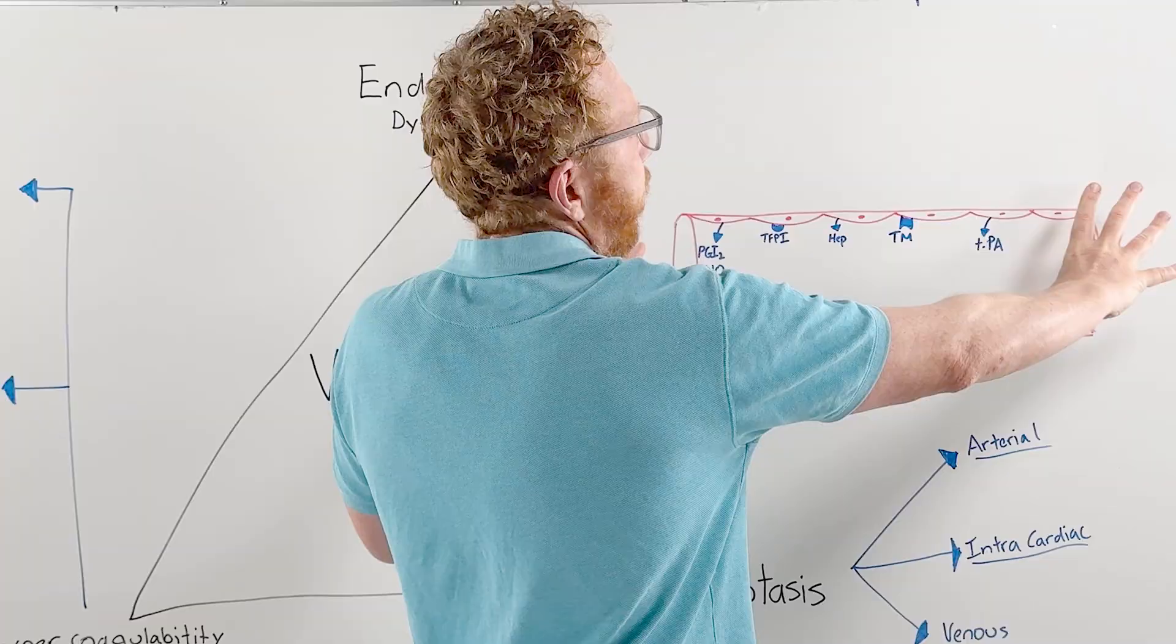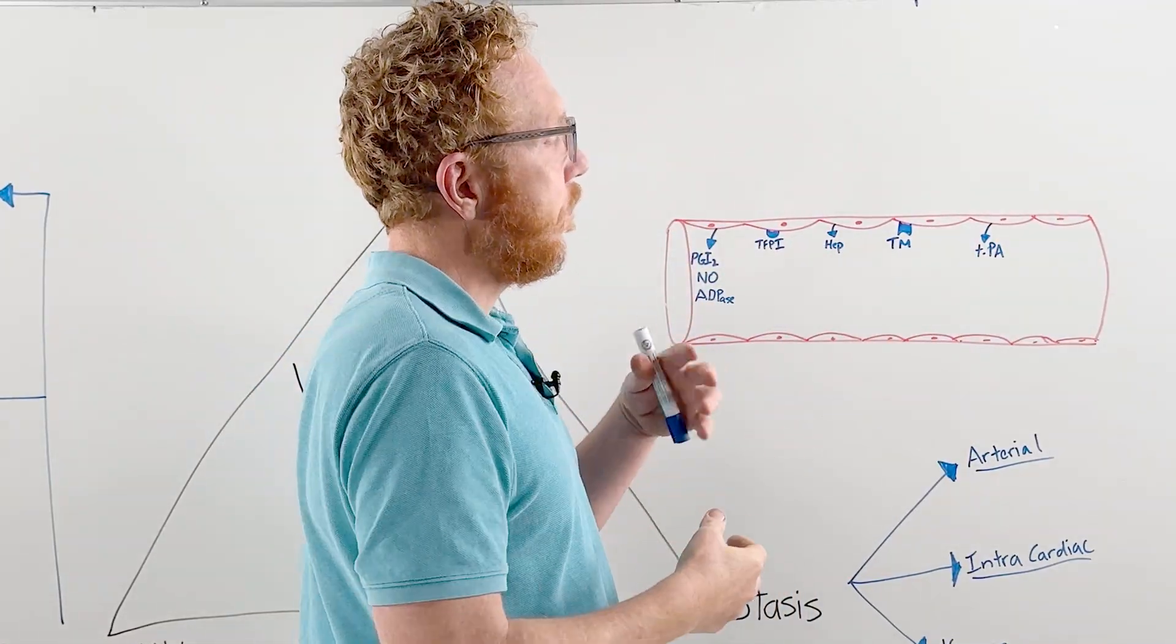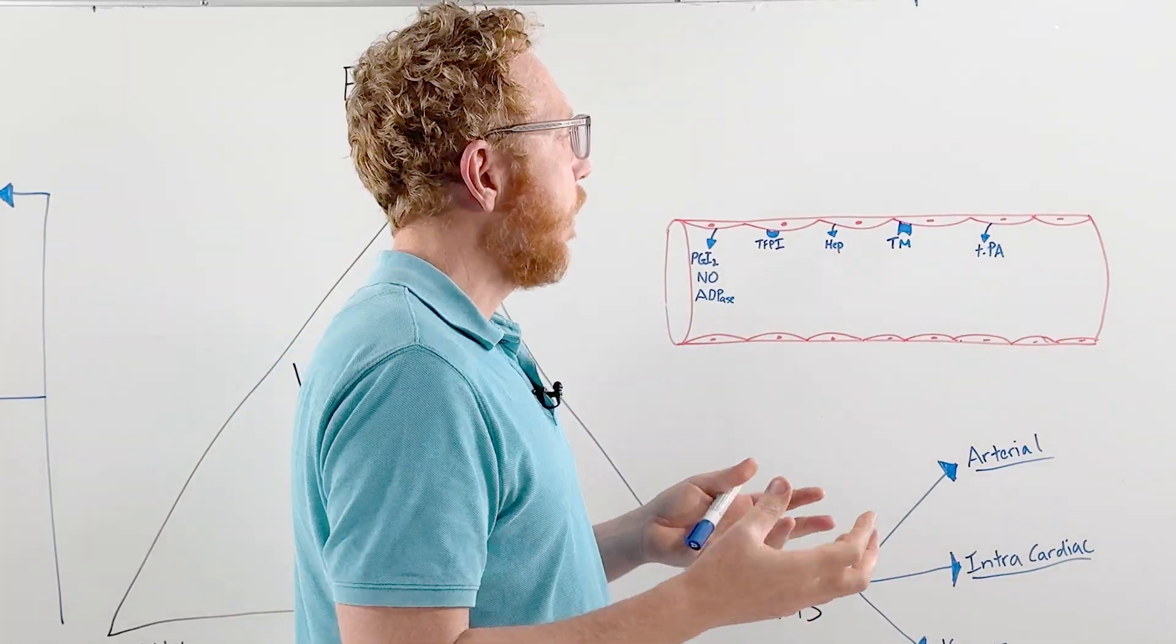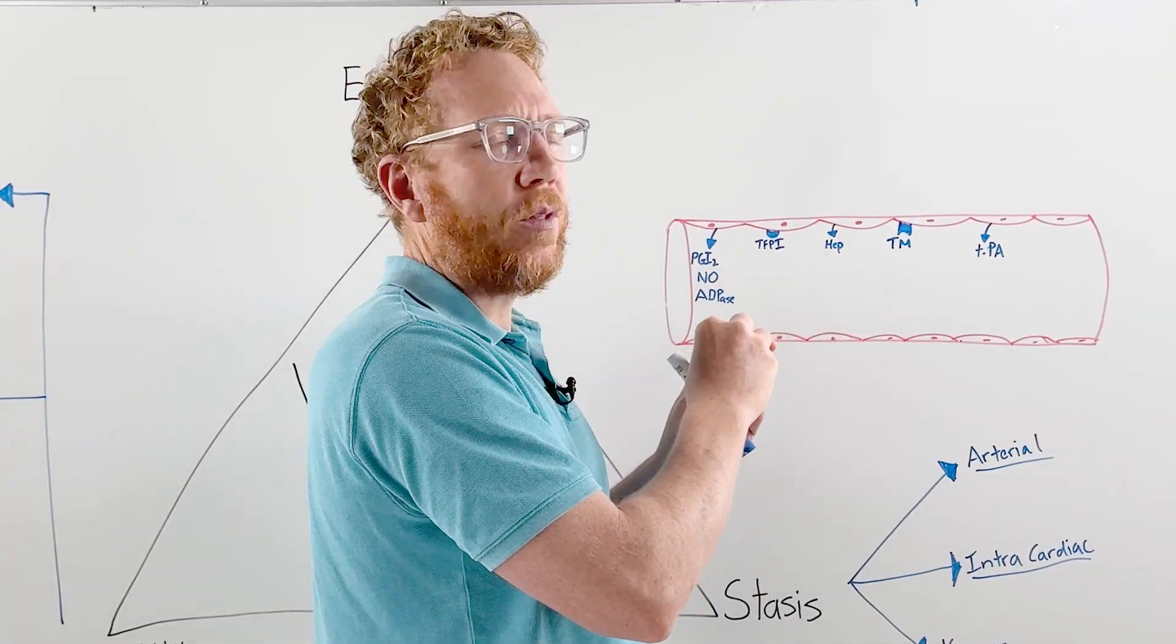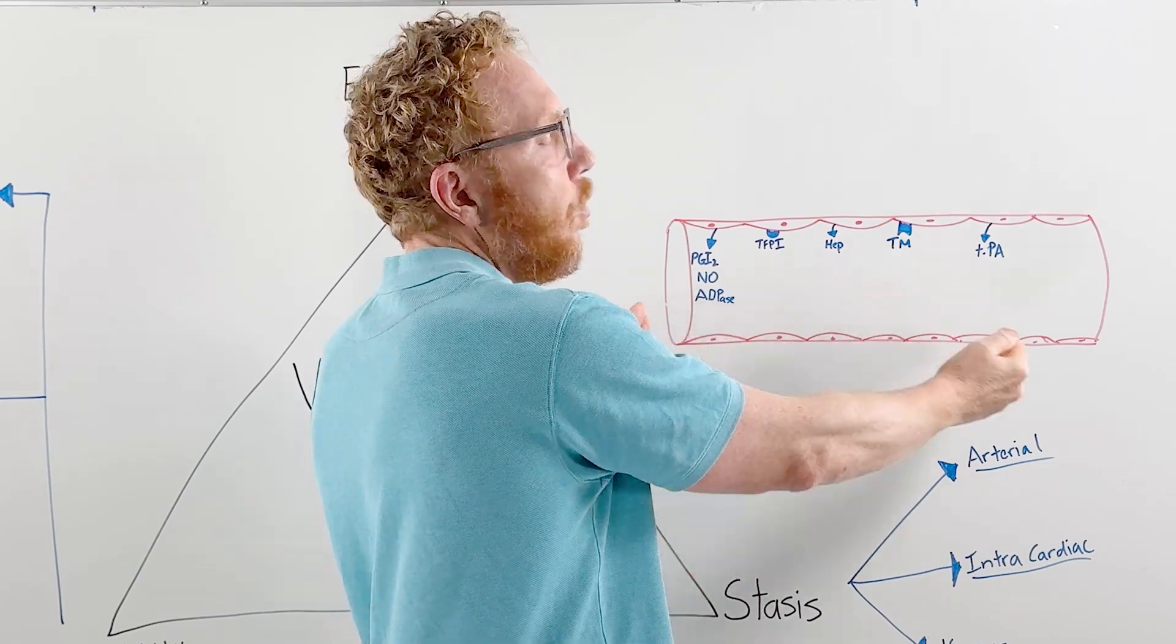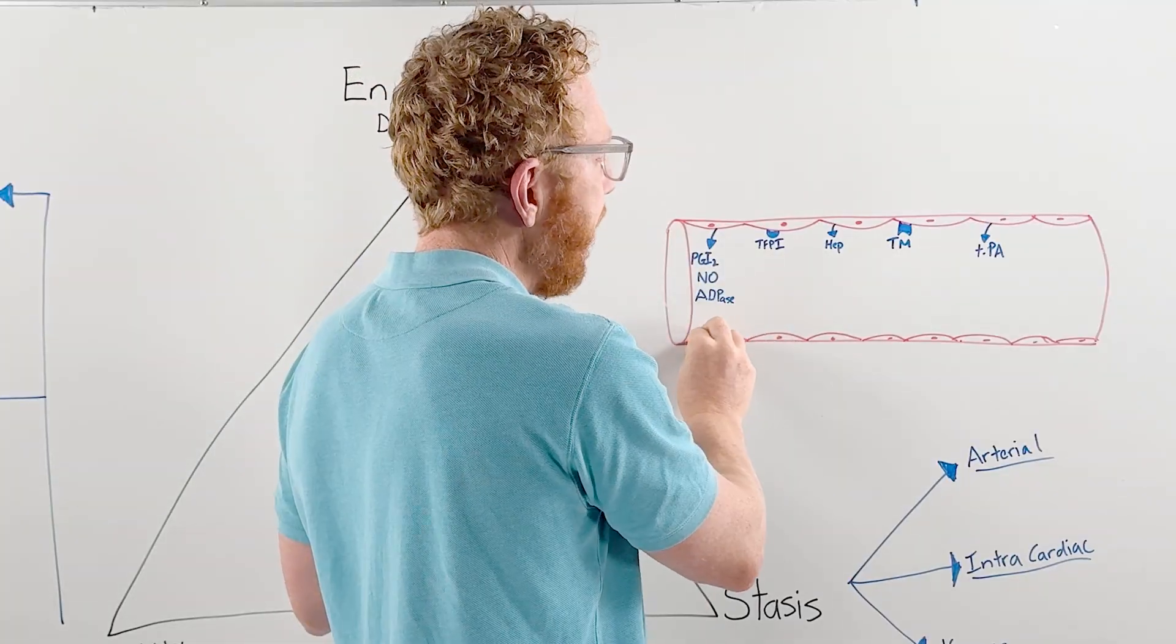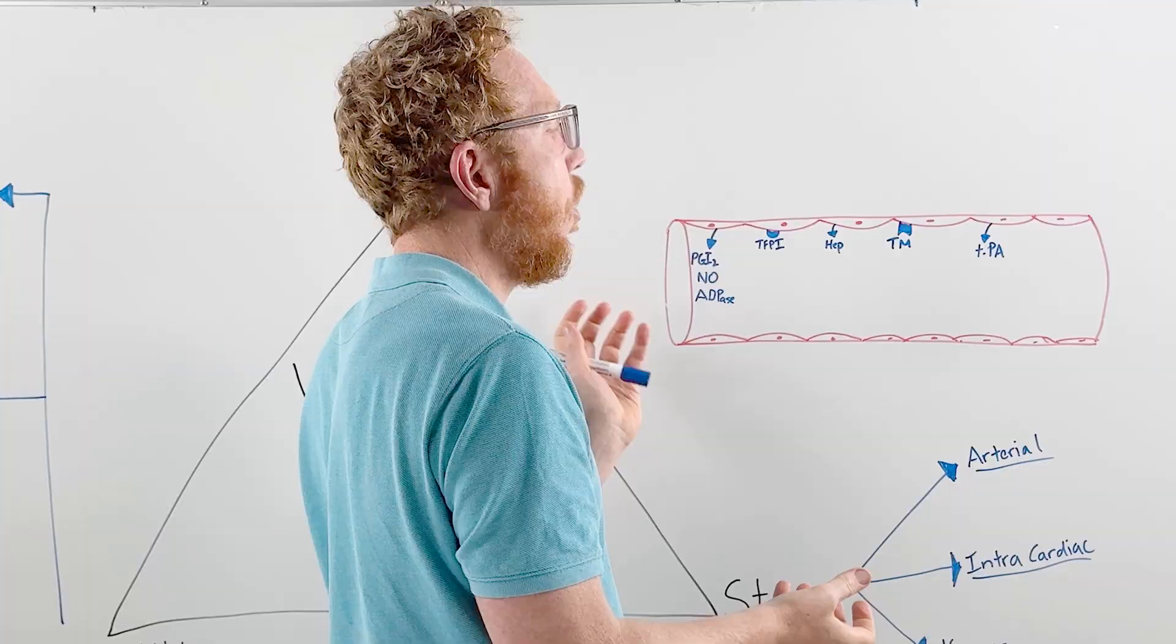Here we've got a blood vessel. Blood vessels, regardless if arterial, capillary, or venous, are lined with a special epithelial tissue known as endothelium. Endothelium is the control center of the blood. It determines whether the blood wants to clot (prothrombotic) or not clot (antithrombotic). It plays a central role in deciding whether it needs to clot or not.